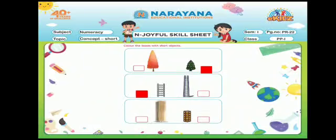Now, look at the third object. There are two buildings here. The second building is the short building. So, color the short building.